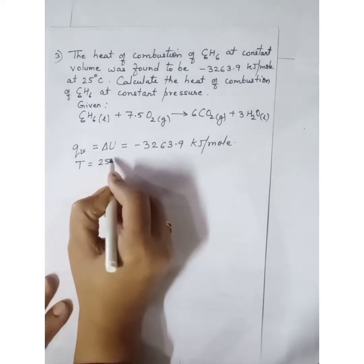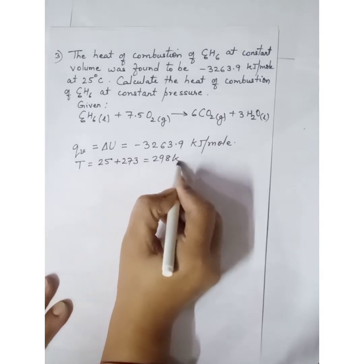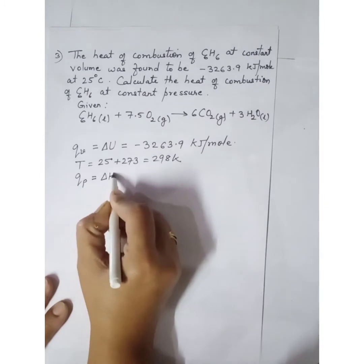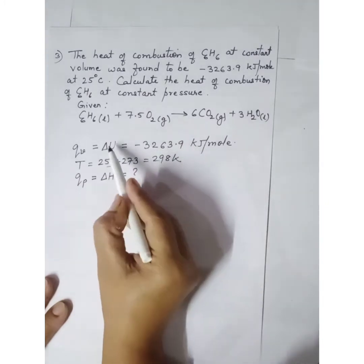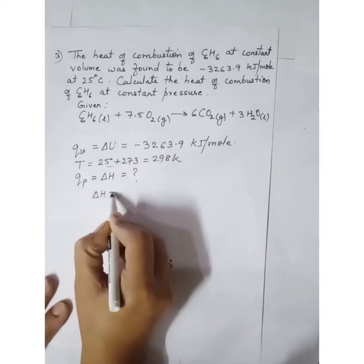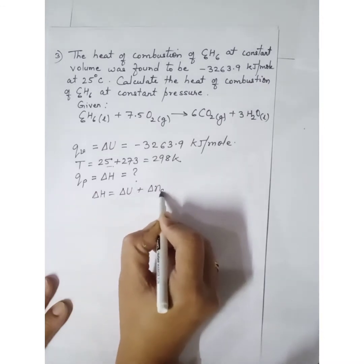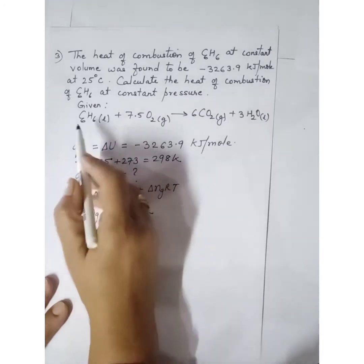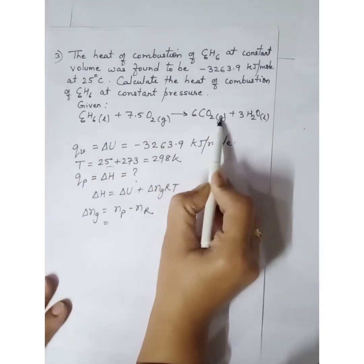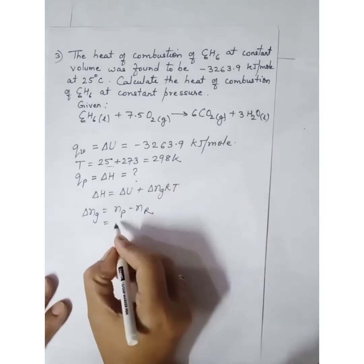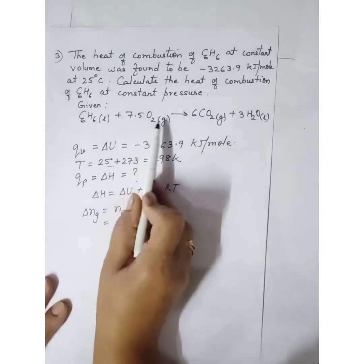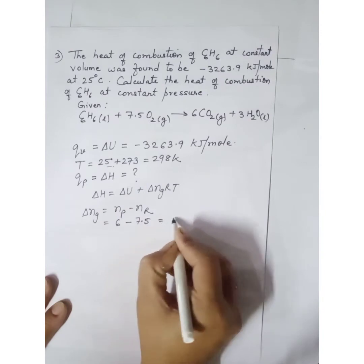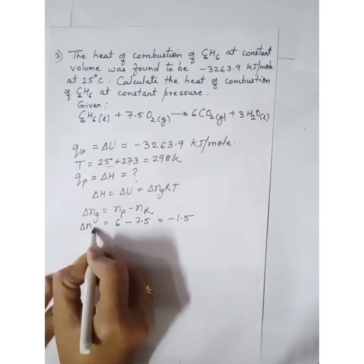Temperature is 25 degree Celsius plus 273, that is 298 Kelvin. We have to calculate the heat of combustion at constant pressure, which is delta H. Using the relation delta H equals delta U plus delta_Ng·R·T, we find delta_Ng equals Np minus Nr. In the products, 6 gaseous molecules (ignoring 3 liquid H2O); in the reactants, 7.5 gaseous O2 (ignoring liquid C6H6). So delta_Ng equals 6 minus 7.5, which is minus 1.5.